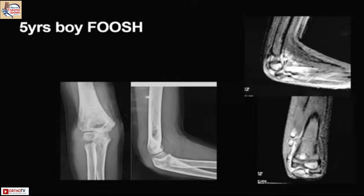On the AP view it's just behind the capitulum, as shown on MRI. So the key messages are: suspect clinically, remember the ossification sequence, read the soft tissue shadows carefully, know the bony alignment and normal variations. Thank you so much for listening.